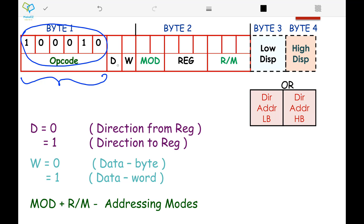The next bit after the opcode is the d-bit, and you can see what the d-bit is telling you. If d is equal to 0, then you have the direction from the register — the data which you are getting is coming from the register. Similarly, if the direction is to the register, then the d-bit will be 1. This you can better understand by using an example.